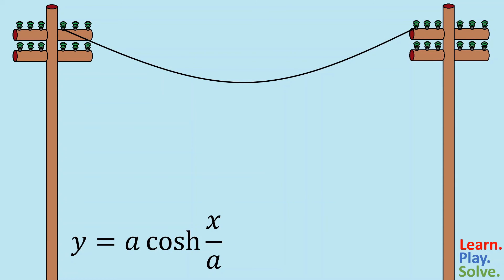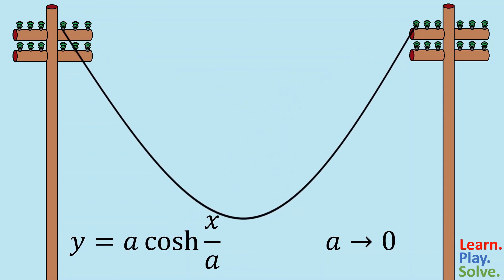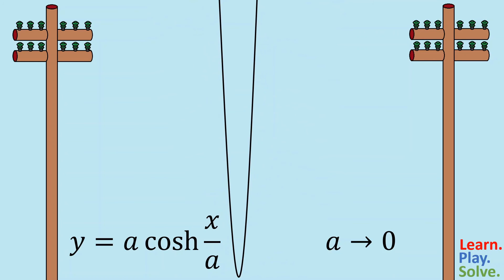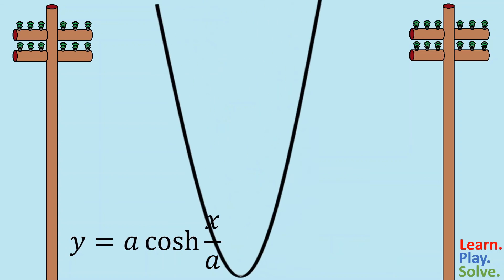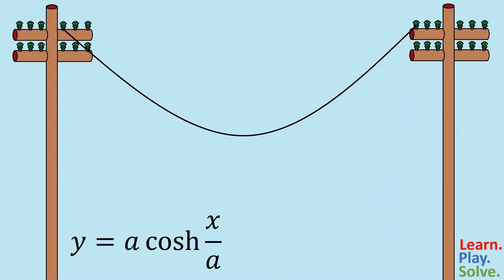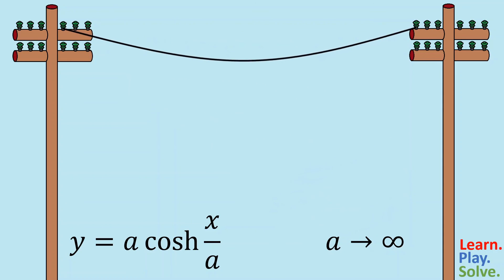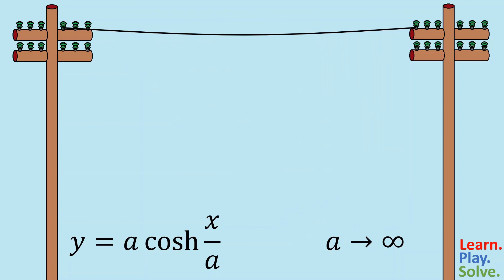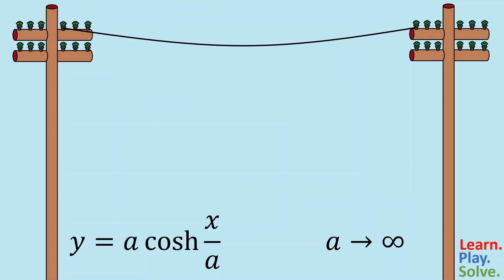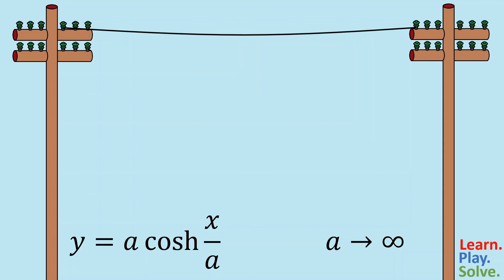Let's see what happens as the value of a changes. As a approaches zero, the cable will begin to sag and droop in the middle, and the two ends will eventually come together. In reality, two cables can never occupy the same space, so a will never actually get to zero — this is reflected in the equation since a is in the denominator, and dividing by zero is undefined. As we go the other way and a approaches infinity, the cable becomes very tight. Of course every cable has mass affected by gravity, so in the real world there will always be some sag — it will never be perfectly straight. This also makes sense mathematically, since you can never actually reach infinity.